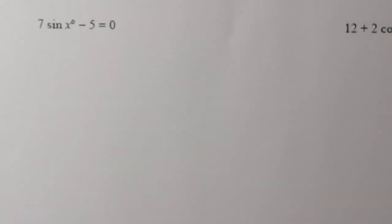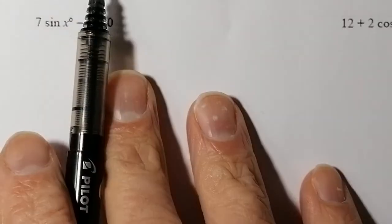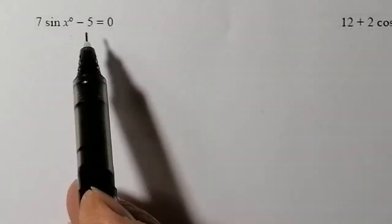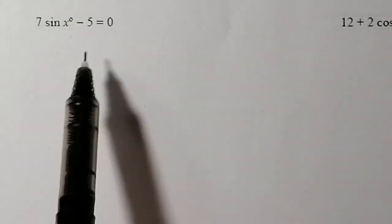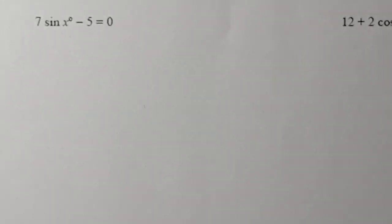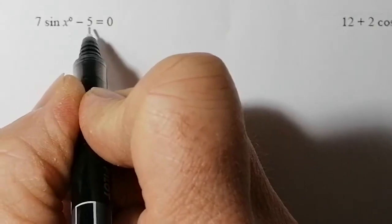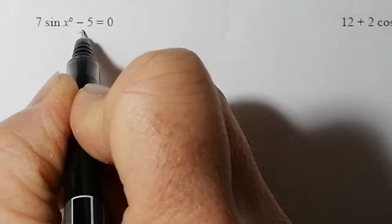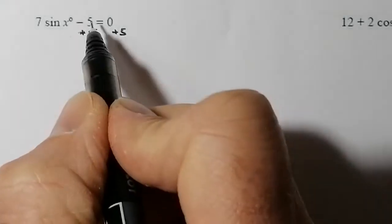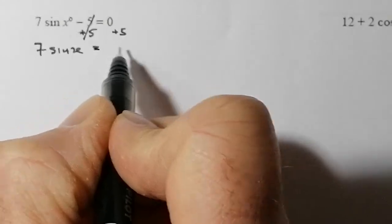So let's solve the first question: 7 sin x² - 5 = 0. We're going to rearrange this equation so that we've got sin x on its own on the left-hand side. First, I'll add 5 to both sides to eliminate that minus 5. So I've got 7 sin x = 5.